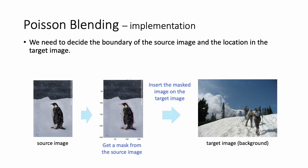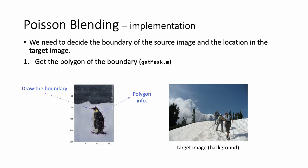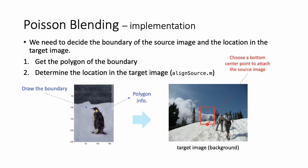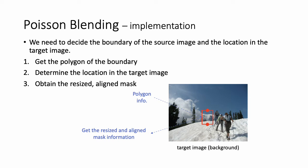Let's get back to Poisson blending. First, we need to decide the boundary of the source image and the location in the target image where we attach the masked image. You can check the code details in my GitHub page. Using the getMask function, get the polygon information through drawing the boundary. Using the alignSource function, choose a bottom-center point to attach the source image. I revised the code to get a second point for resizing the source image — by computing the difference of y-axis value of the two given points, the size of the source image can be rescaled easily. From this process, we finally obtained the resized and aligned mask information, so we are ready to design a matrix equation for Poisson blending.